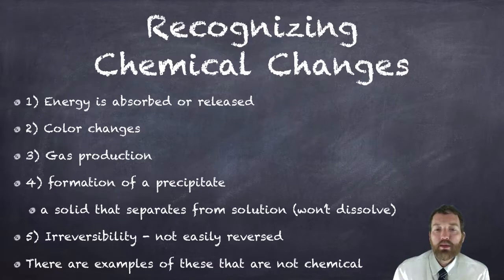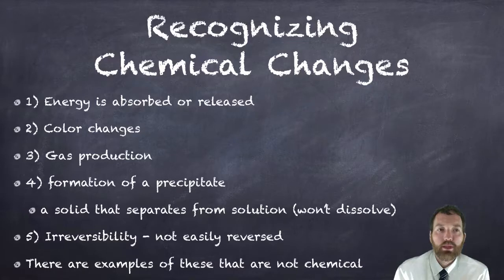Now there are examples of these that are not chemical, and not every chemical change will have all of these five things happening. Some reactions are reversible. Sometimes you can have gas produced that is not a chemical reaction, like boiling water. If you boil water you'll get bubbles. That doesn't mean you're doing a chemical reaction on the water. It's actually a physical change. But these are the five clues that we tend to look for when we're looking at chemical reactions to decide whether a chemical change is taking place or not.